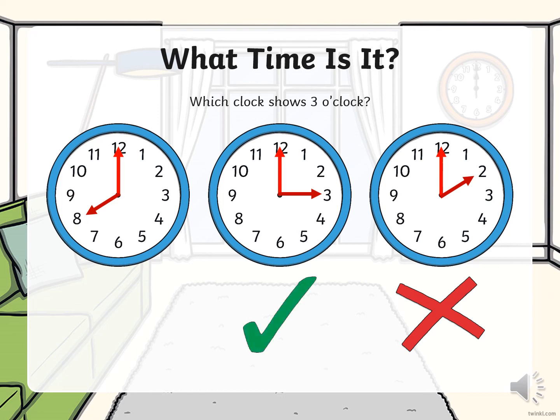And the short hour hand is pointing to 3, so this clock shows us 3 o'clock.